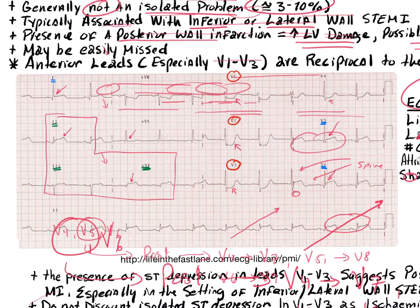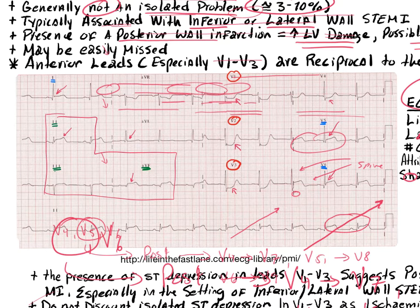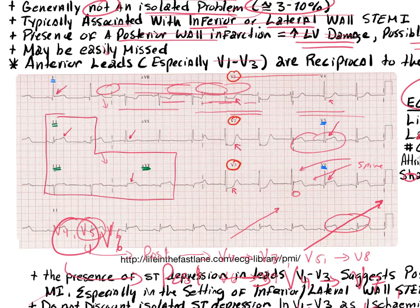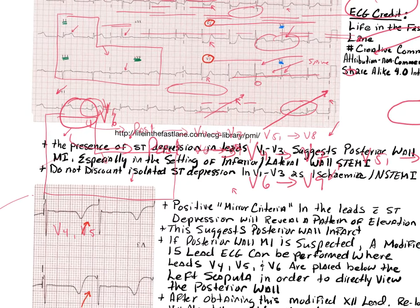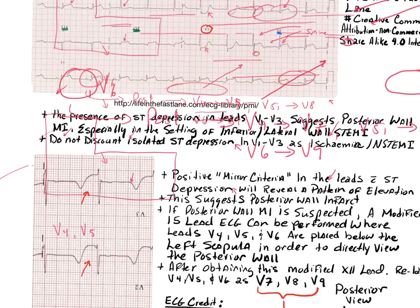Going back to the mirror test mentioned earlier: if we flip the ECG upside down and look at it in a mirror, does the depression in V1–V3 look like elevation? Yes — and that points to the presence of a posterior wall myocardial infarction. The presence of ST depression in V1 through V3 will suggest posterior wall MI.